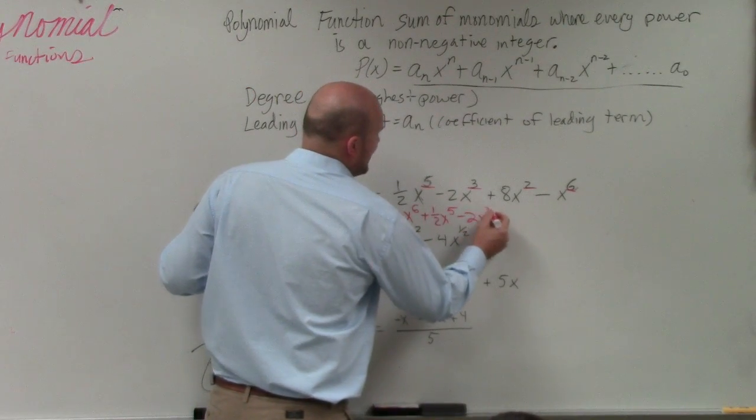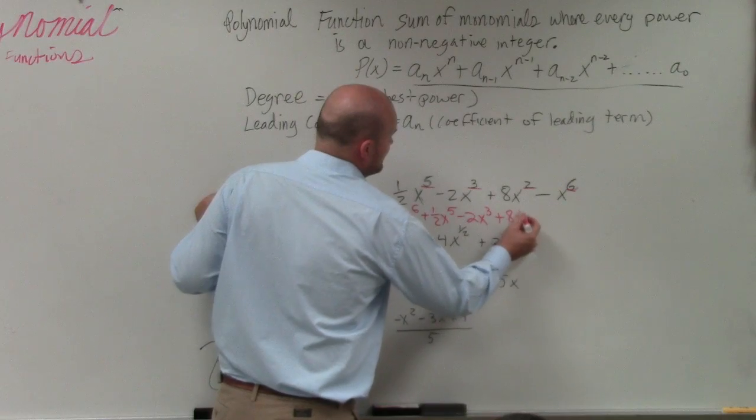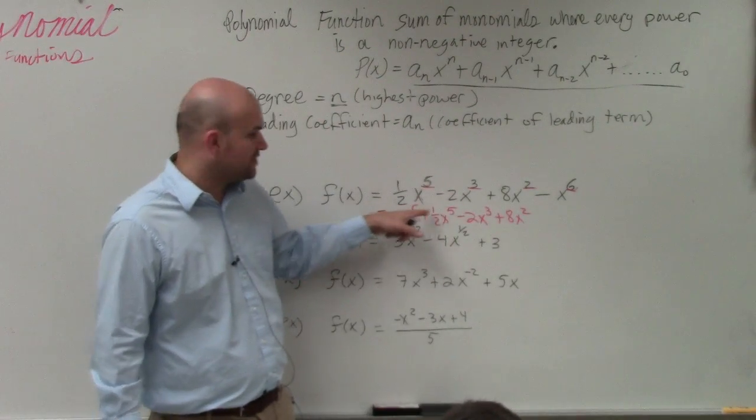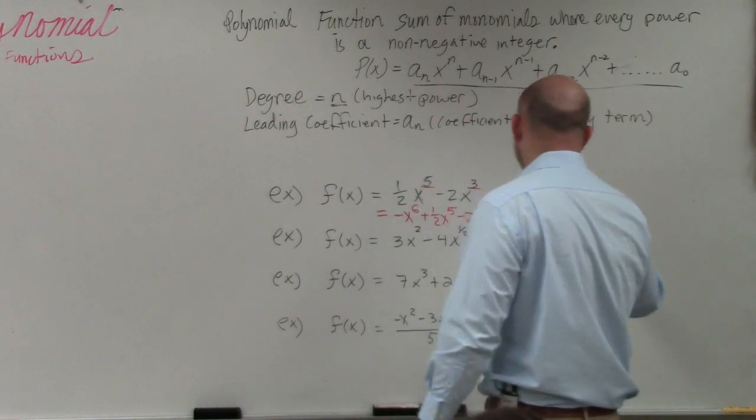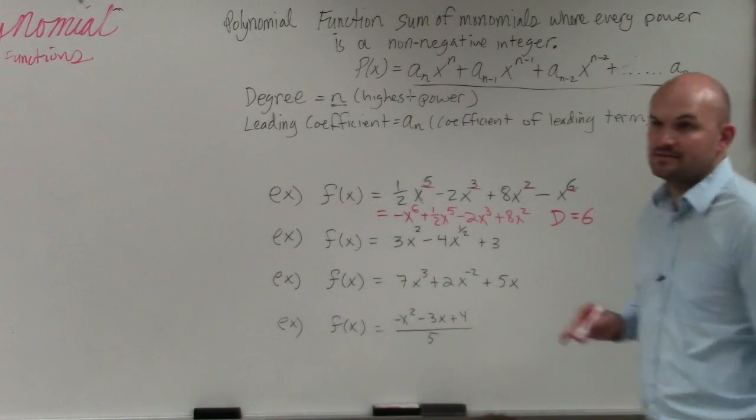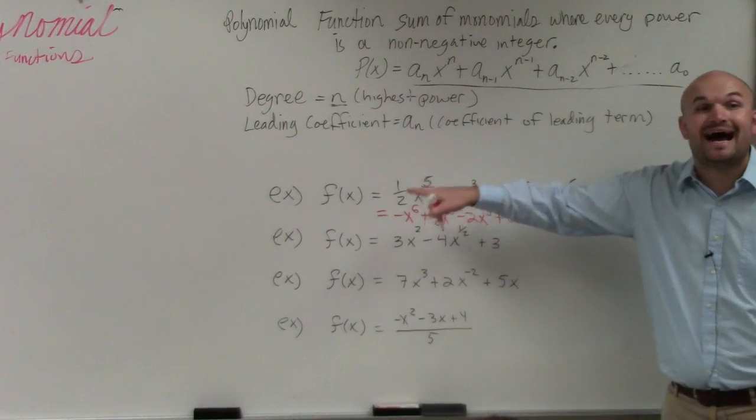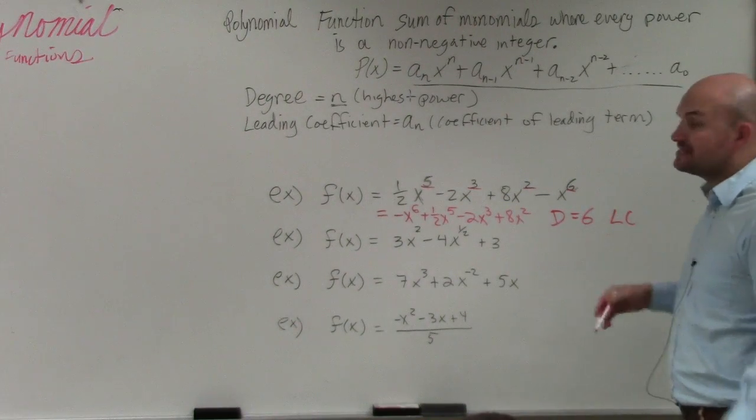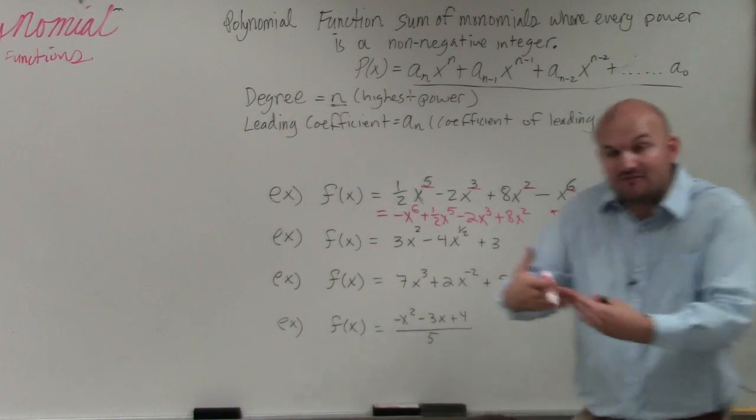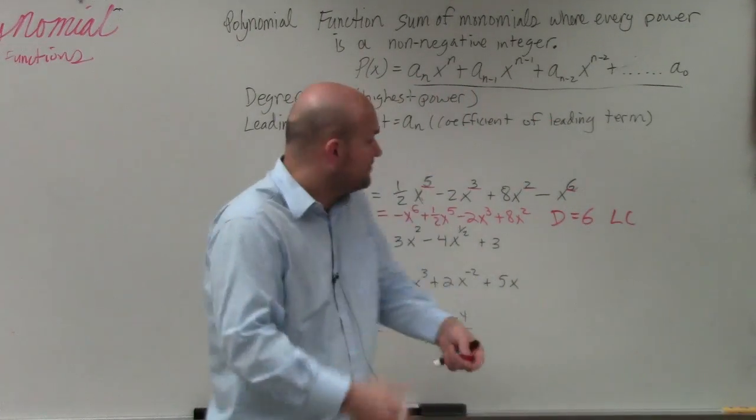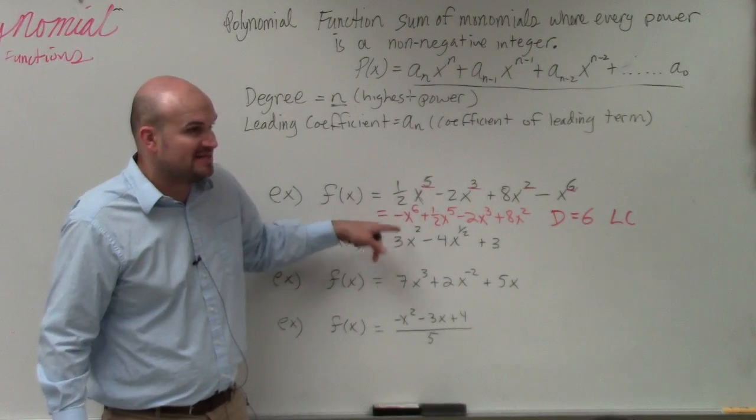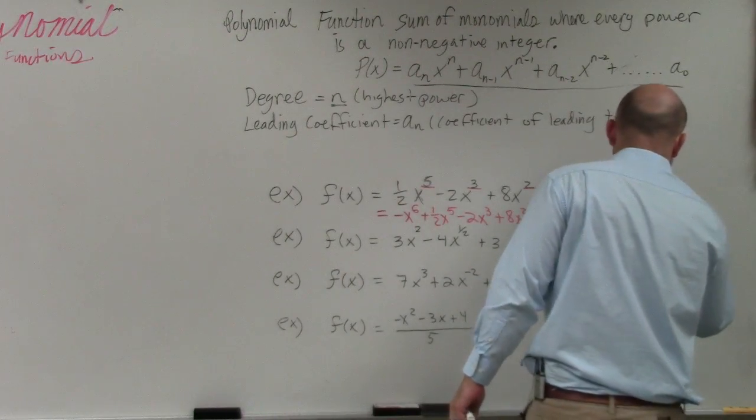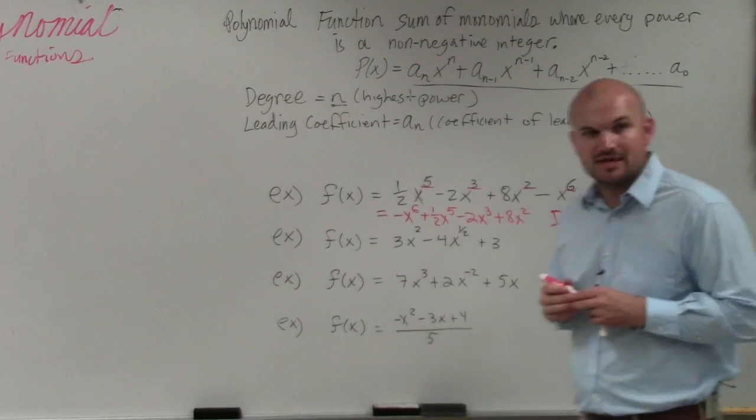So make sure, guys, whenever you're doing any of these problems, make sure you always have them in descending order. Highest power first, going down. Now, I can say the degree is equal to 6, right? Because that's my highest power. And my leading coefficient is going to be the coefficient of that term, which if I just have a negative symbol there, that really represents a negative 1. Negative 1.